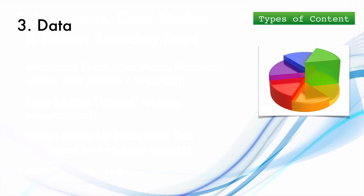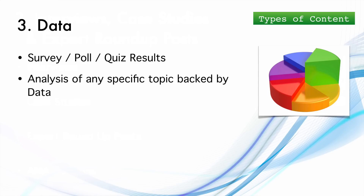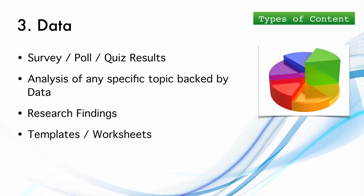The third type is data. Data content includes surveys, polls, or quiz results; analysis of a specific topic backed by data published by someone else; your own research findings; and templates or worksheets like an income tax calculator or home EMI calculator. Data usually carries very good authority because it is hard to replicate, and proprietary research findings attract a lot of backlinks, making your blog more authoritative.